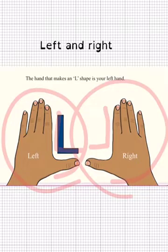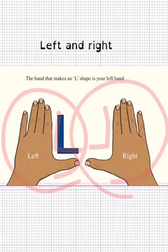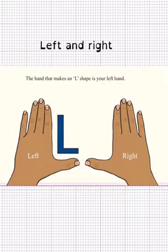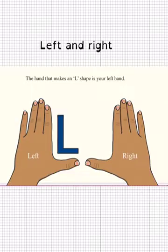Another way you can remember this is by simply remembering which hand you write with, whether you're left-handed or right-handed. If you're right-handed then you know that the hand that you write with is your right side. So we now know that when someone tells us to take a left turn this is turning towards our left hand, and if they tell us to take a right turn that is turning towards our right hand.